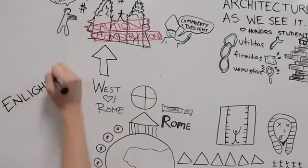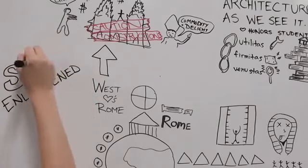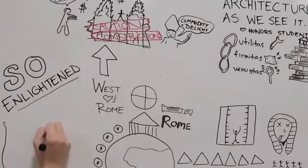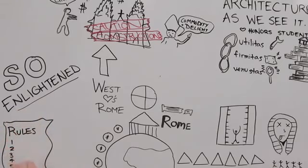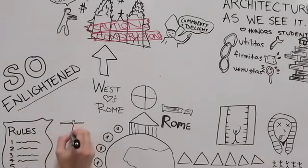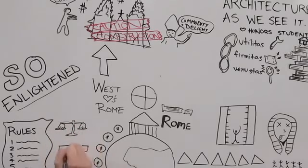During and after the Enlightenment, we began to see people writing down rules for architecture. The Renaissance countered the Gothic thought and refocused their style of building back to classical architecture. It's all about precision, balance, and symmetry.